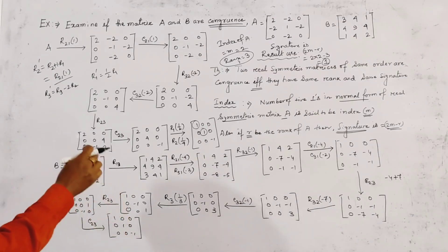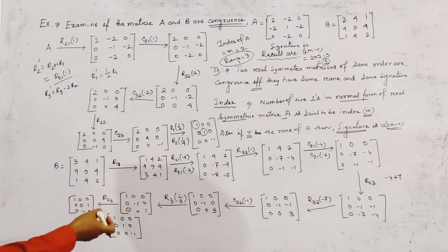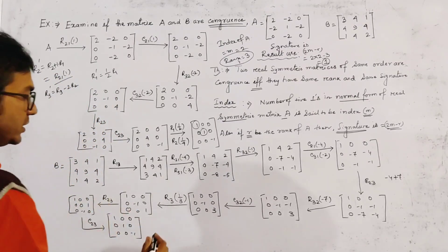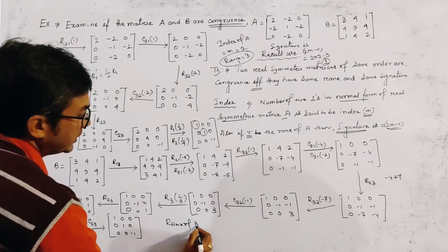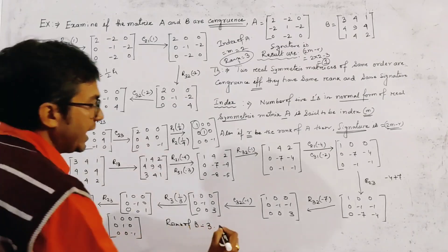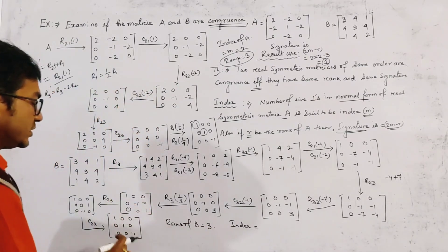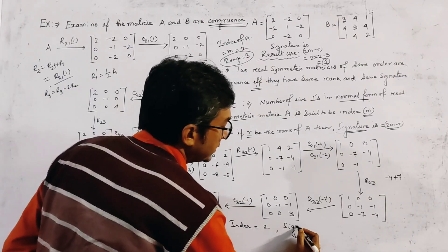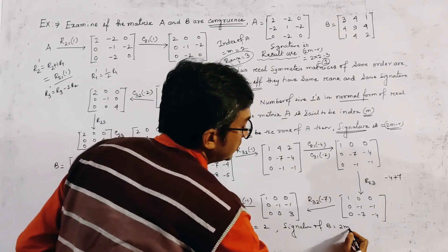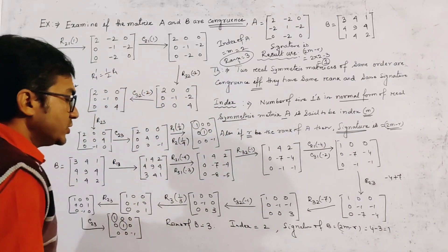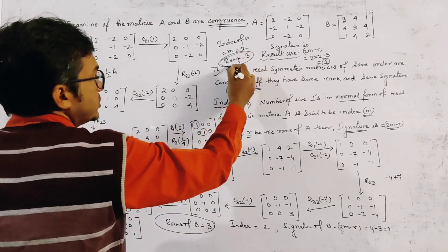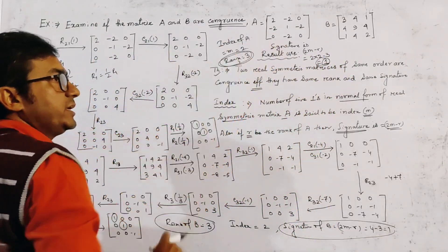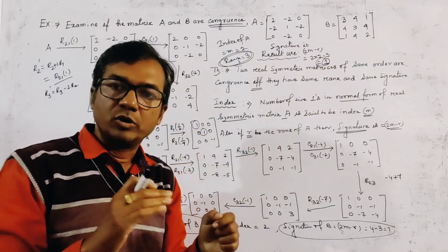Clearly, the normal form of B and the normal form of A are the same. The rank of B equals 3, since it has 3 non-zero rows, and the index equals 2 since it has 2 positive ones. So the signature of B equals 2M minus R, which is 4 minus 3, giving signature equal to 1. Since rank of A equals rank of B equals 3, and signature of A equals signature of B equals 1, matrices A and B are congruent.